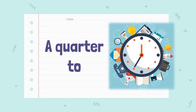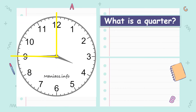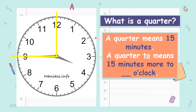Next is a quarter to. What is a quarter again? A quarter means 15 minutes. A quarter to means 15 minutes more to the next hour. So let's see — is this 15 minutes to the next hour? Let's count. 1, 2, 3, 4, 5 minutes. 6, 7, 8, 9, 10 minutes. 11, 12, 13, 14, 15 minutes.